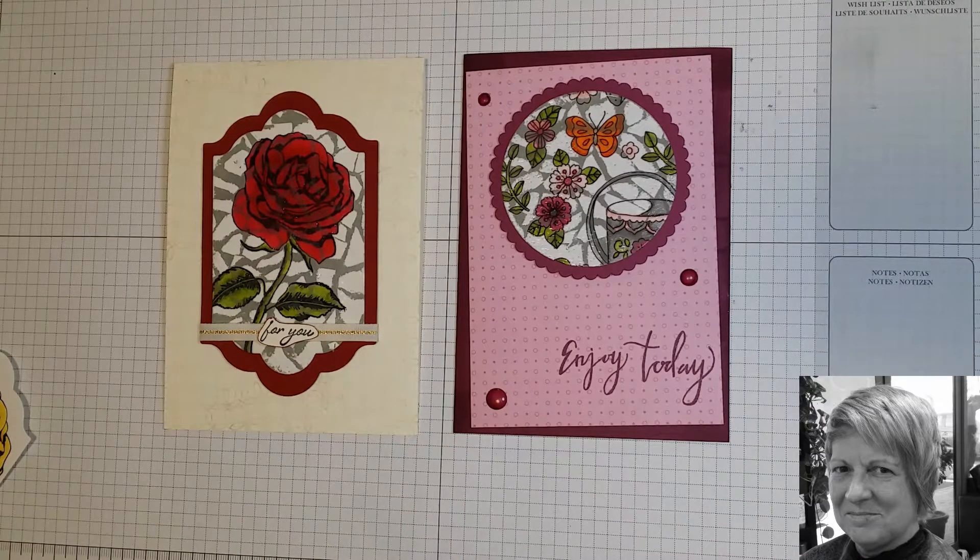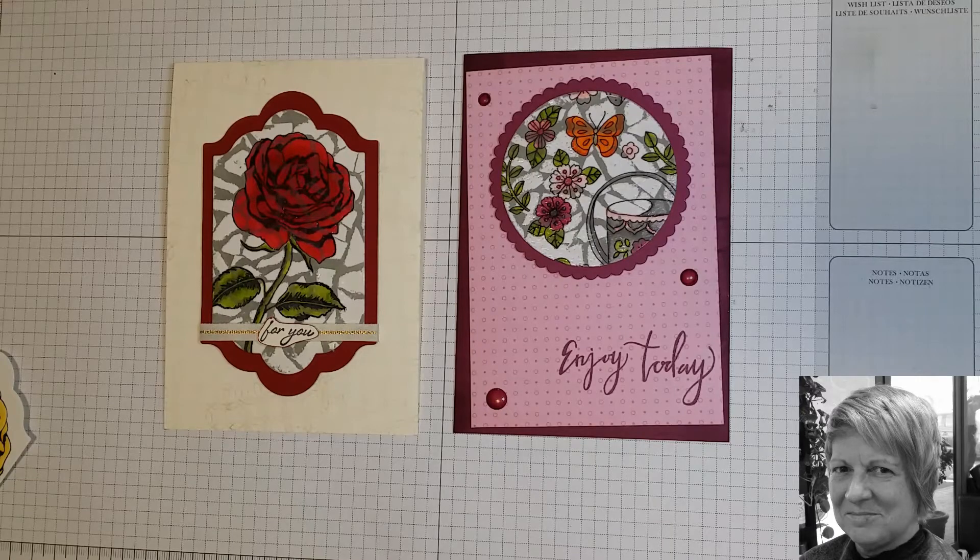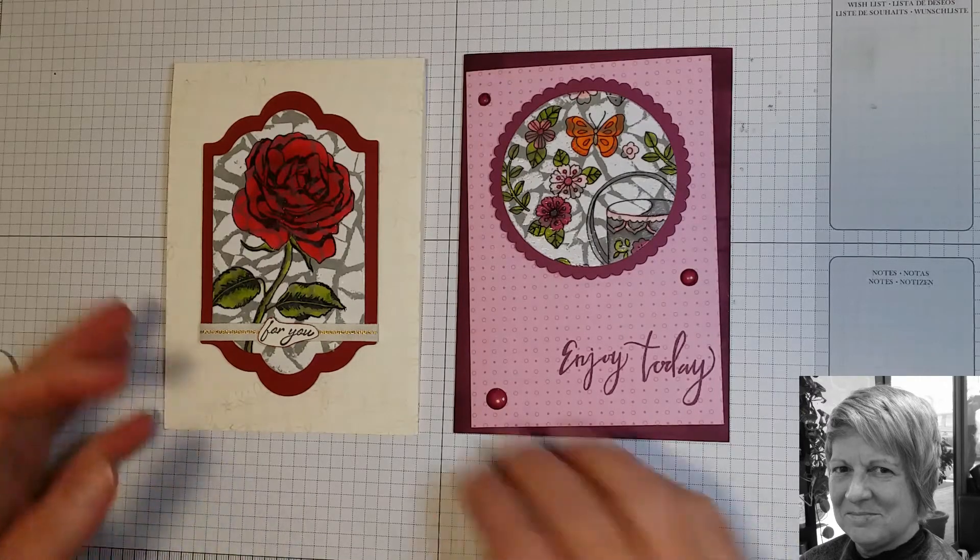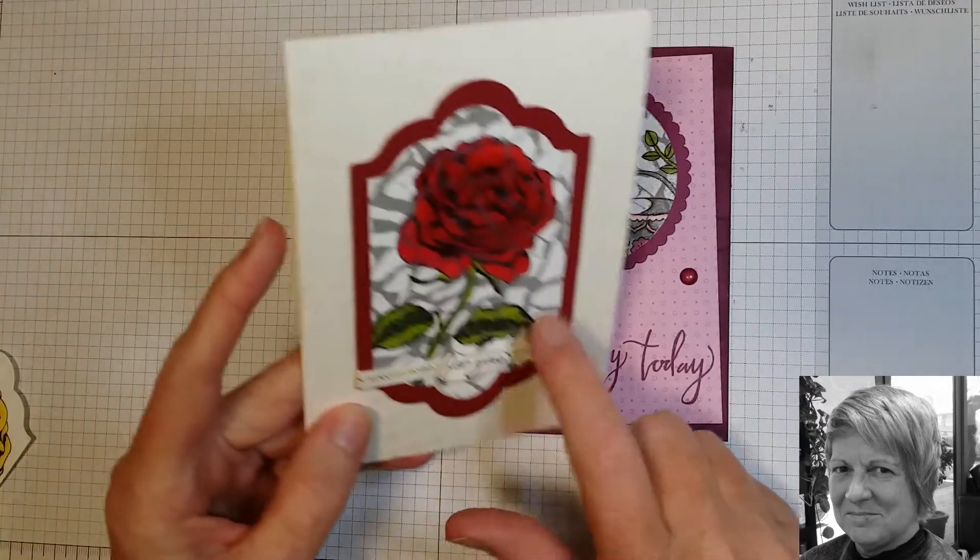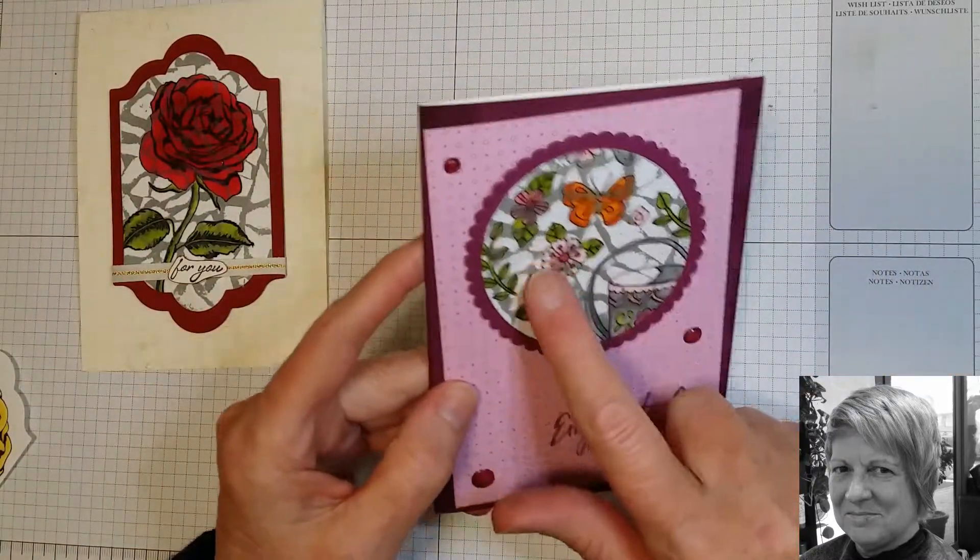Hi, this is Annette Sullivan from Lavender Thoughts. Today I'm going to show you an old technique called stained mosaic. You can see I have used it on this rose from Graceful Garden and on some designer paper here.